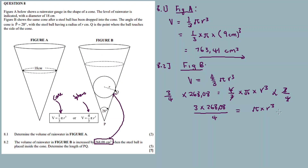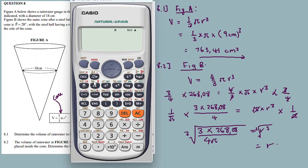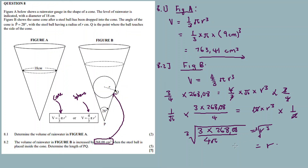Now divide both sides by pi. So r cubed equals 3 times 268.08 divided by 4 pi. Then take the cube root of both sides to isolate r. Calculate: cube root of (3 times 268.08 divided by 4 pi) — the answer gives us r equals 4 centimeters.